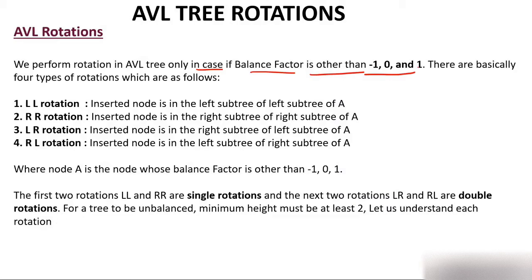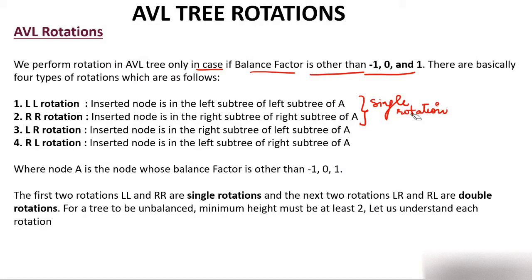There are basically four types of rotation. The first two are LL and RR, which are called single rotations. The other two are LR and RL, which are called double rotations. We will explain why they are called single and double rotations shortly.